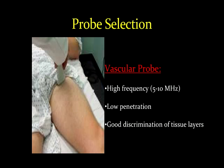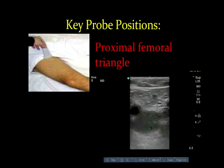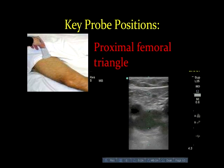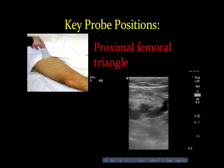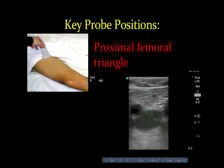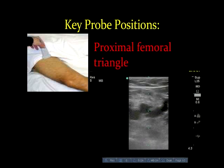Which probe we select is important. Keep in mind that the structures we'll be visualizing in most patients are very superficial, less than six centimeters below the surface, so we would choose the vascular probe or the linear high-frequency probe. This will give us low penetration and good discrimination and detail of the tissue layers. The key probe positions we focus on in bedside point-of-care ultrasound for DVT are two: the proximal femoral triangle and the popliteal fossa.